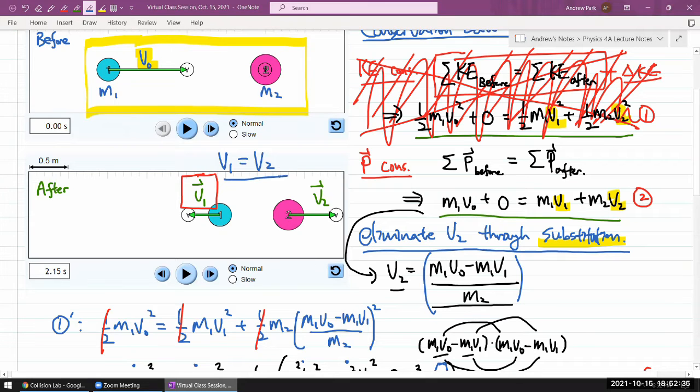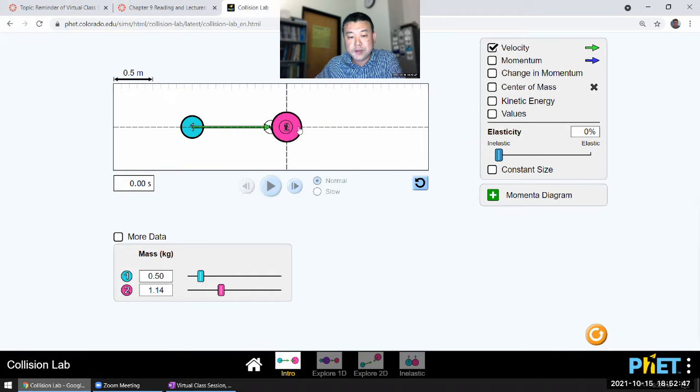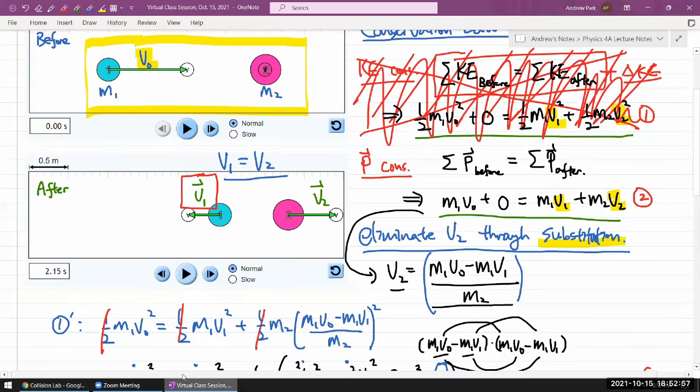You can see it here. In completely inelastic collision, well, their masses don't have to be the same. In a completely inelastic collision, after they collide, they stick together and move together. So V1 is equal to V2. So that's the additional piece of information that a completely inelastic collision gives you.